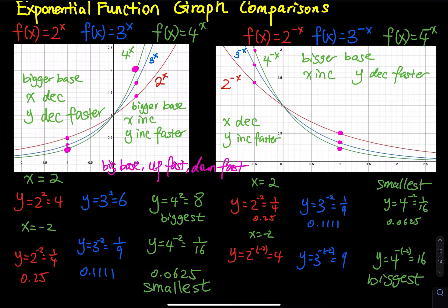So if they ask you to graph three or five functions on the same window, look at the bigger base. For that bigger base, when x is positive, y has the biggest y value. When x is negative, the function with the bigger base has the smallest y value. The bigger base: when x goes up, y goes up fast; when x goes down, y goes down fast.